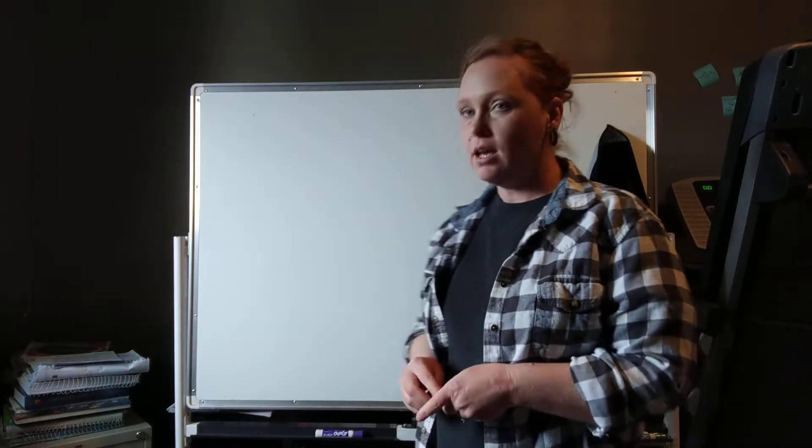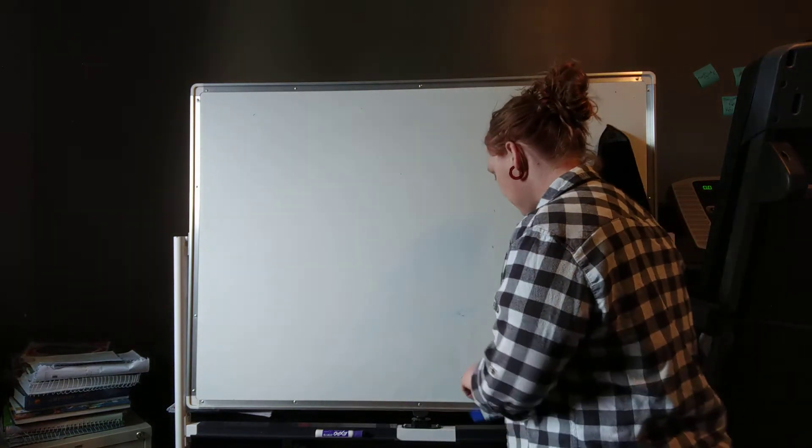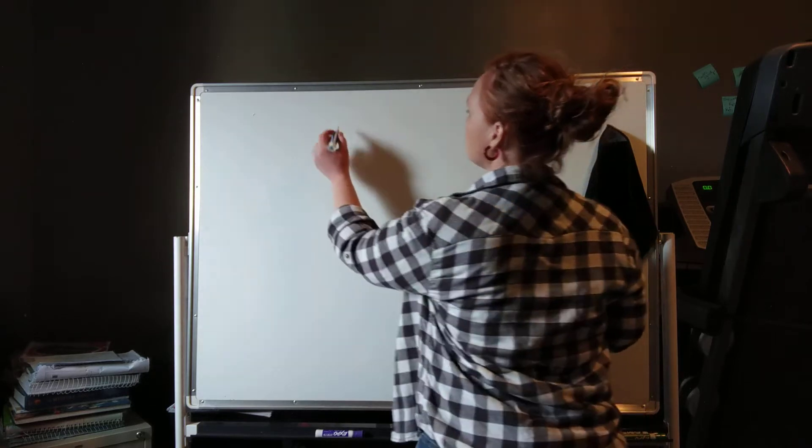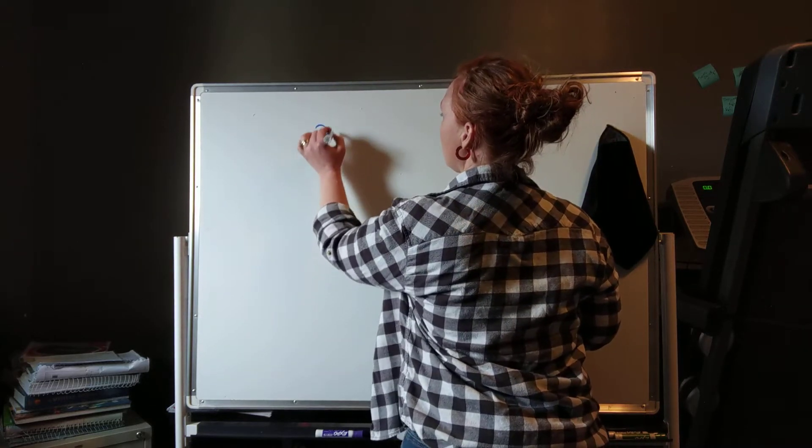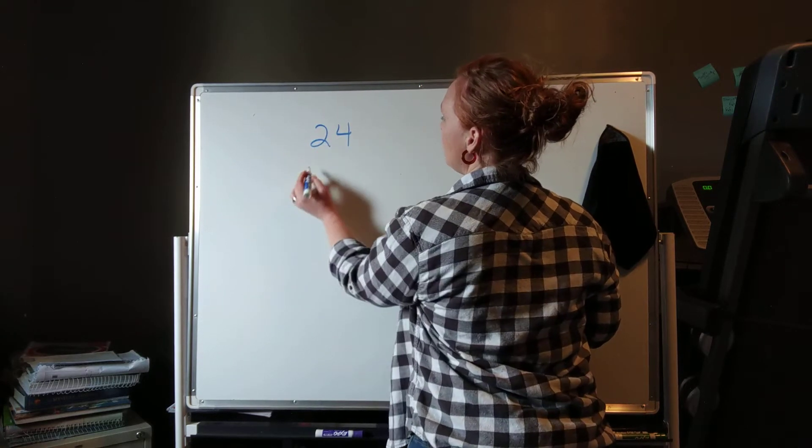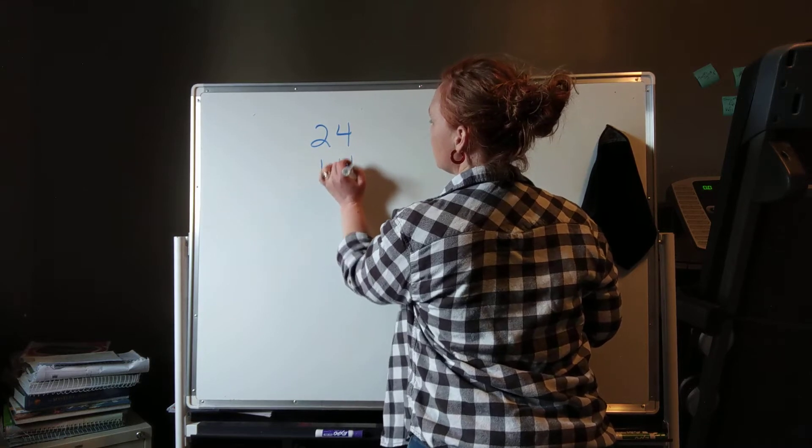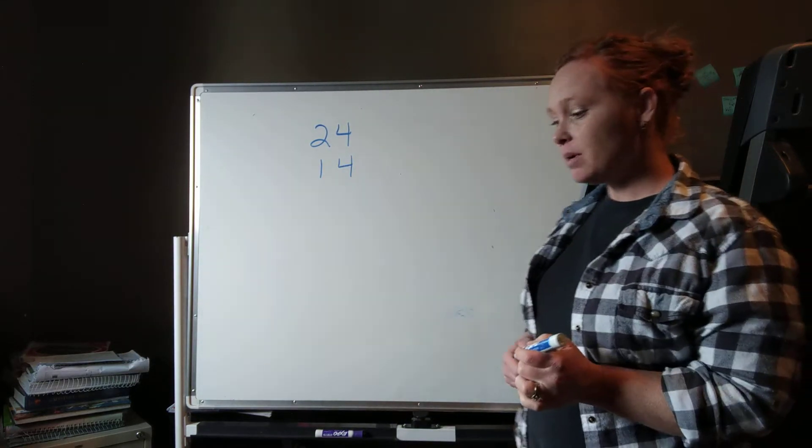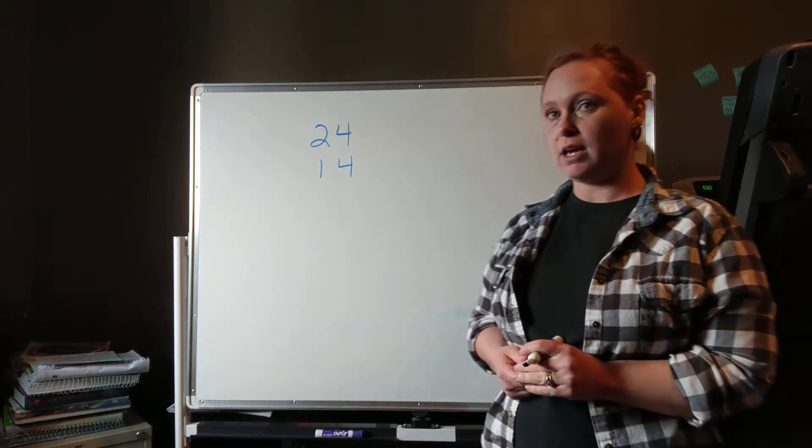So the last time that we did math together, we started doing multiplication, double digit multiplication. So what I mean by that is we had two digits on the top, and then we had two digits on the bottom, and we're going to be continuing with that multiplication.